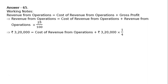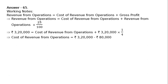Hence, gross profit is ₹80,000 (one-fourth of ₹3,20,000). Therefore, cost of revenue from operations equals ₹3,20,000 minus ₹80,000, which equals ₹2,40,000.